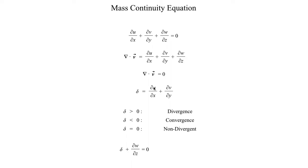If we take this expression for delta — du/dx plus dv/dy — we can replace du/dx plus dv/dy on the left-hand side with lowercase delta. So we get delta plus dw/dz equals zero. Rearranging, we get dw/dz equals negative delta. So if delta is negative, meaning we have convergence, then dw/dz is positive; and if delta is positive, meaning divergence, then dw/dz is negative.